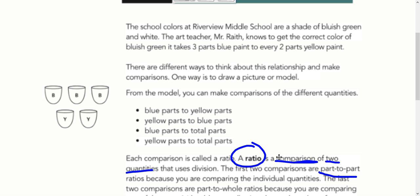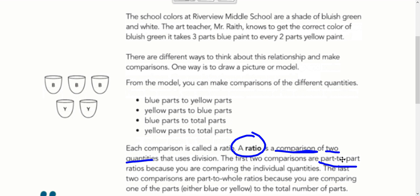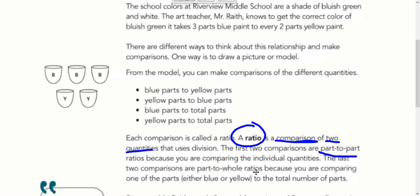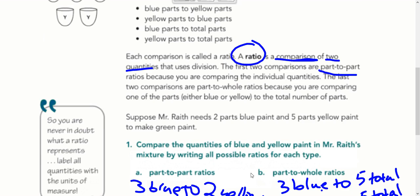A ratio is basically a comparison of two quantities that uses division. Again, a ratio is a comparison. Two types of ratios: we can have a part-to-part ratio, and we can have a part-to-whole ratio. Let's take a look at what that would look like.